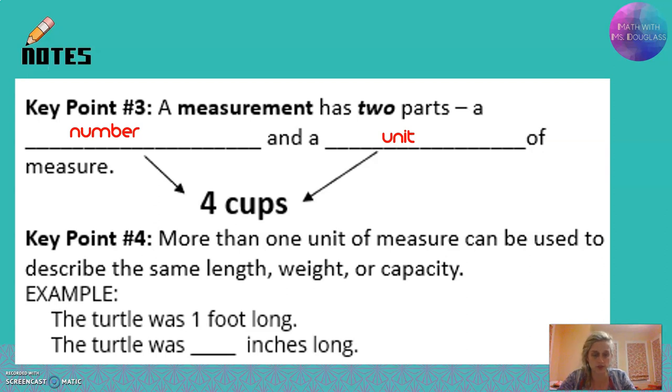We can use more than one unit to describe the same thing. For example, I can say, 'I saw a really giant turtle. It was a foot long.' I can talk about the same exact turtle and say, 'I saw a really giant turtle. It was 12 inches long,' because 12 inches is the same thing as one foot.